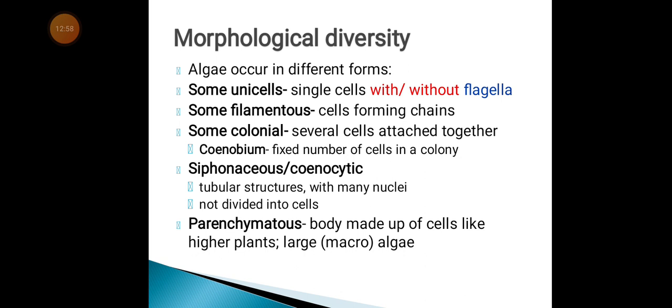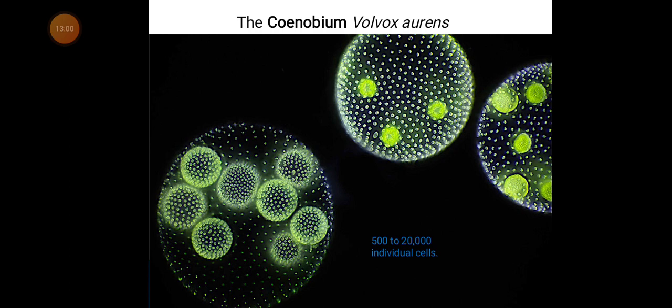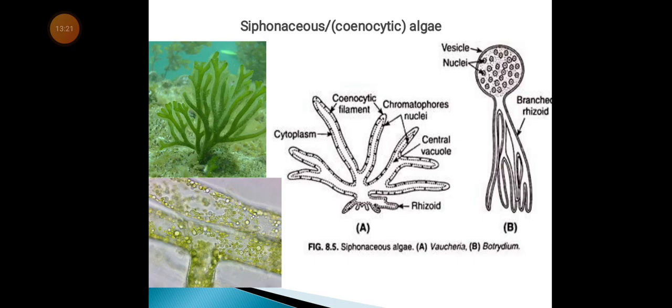These are the different shapes and forms you should expect to find in algae. The coenobium includes organisms like the volvox, which can have 500 to 20,000 individual cells coming together. The siphonaceous structures are ones you will be drawing in your labs — just know their definition so you are not confused.